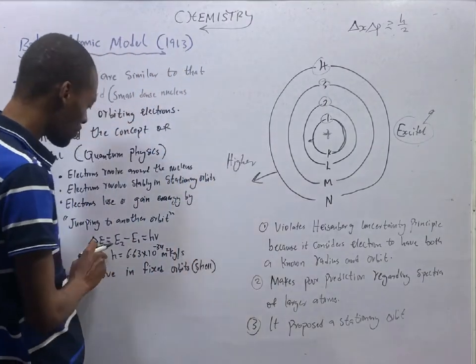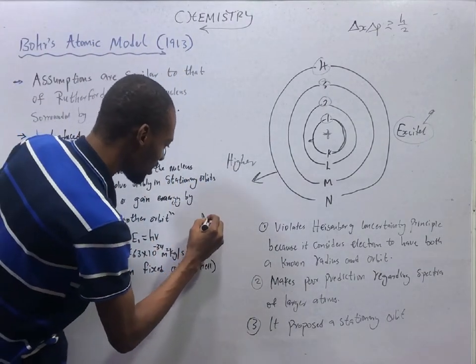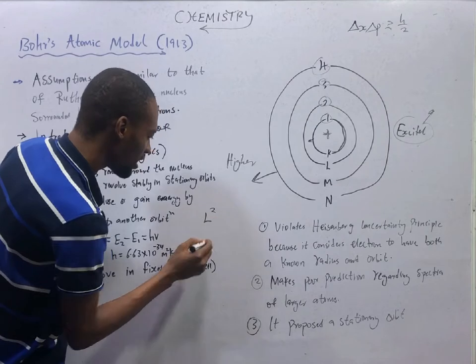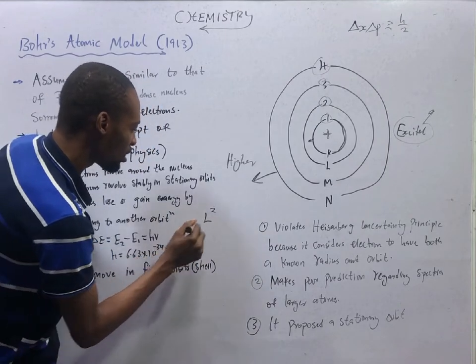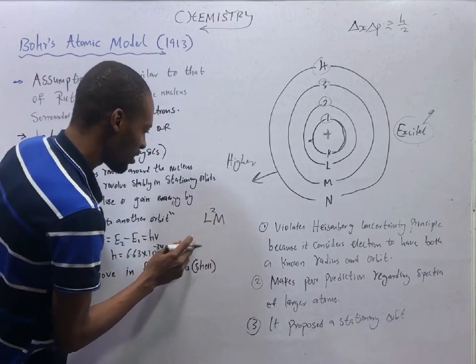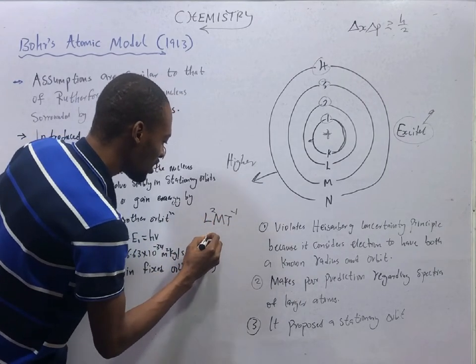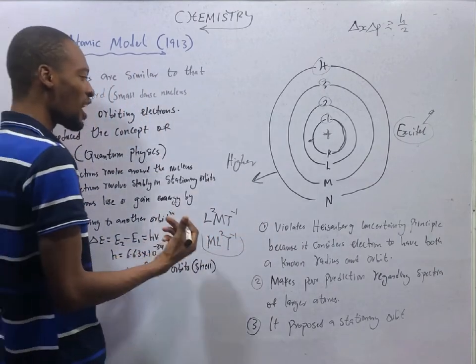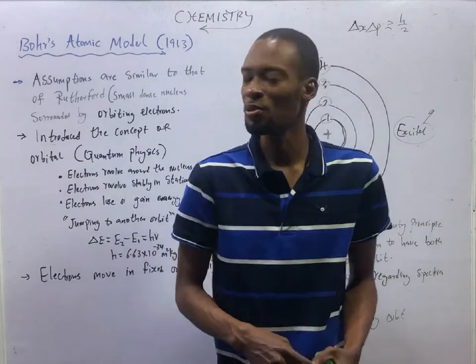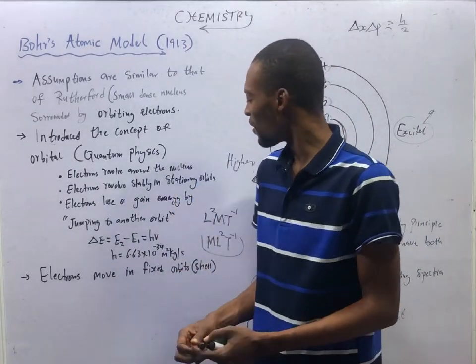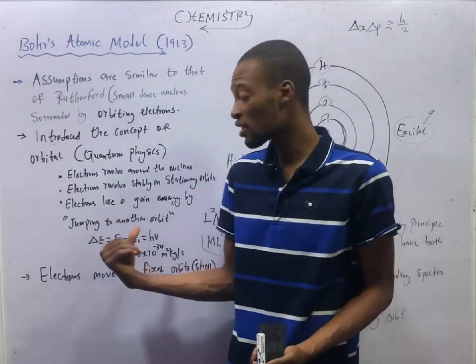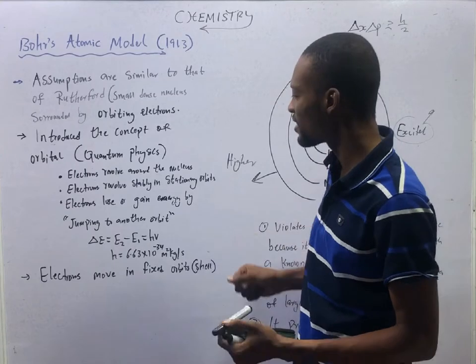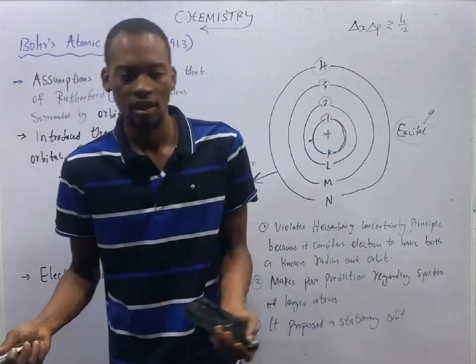If we are taking a look at dimension of Planck's constant, meter squared is L squared, kilogram is mass M, per second is time raised to the power of minus 1, which is ML² T to the power of minus 1. So from the unit we are able to derive dimension. This is to tell you about dimension. And he decided that electrons move in the fixed shell.